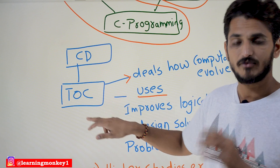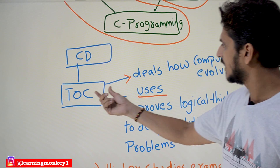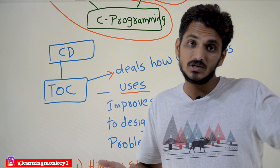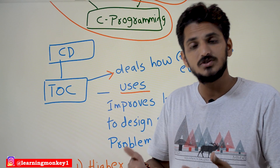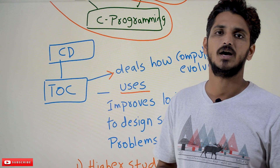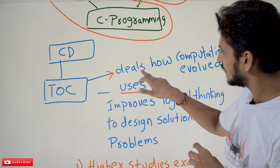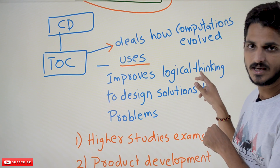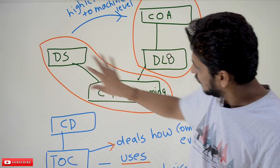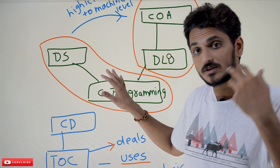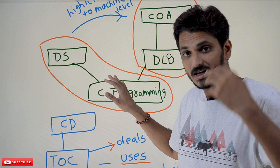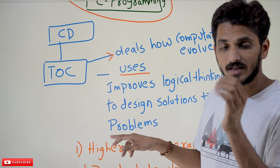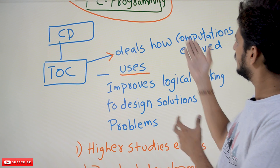Theory of Computation deals with how computations have evolved with improving memory devices — from sequential to random access memory — and how these computations evolved. The concepts in TOC improve your logical thinking to design solutions to problems. Your understanding of how you design solutions to real-time problems improves with this subject, because it is completely dealing with how computations are evolved.